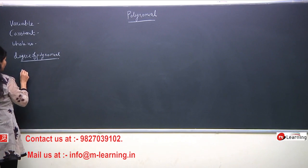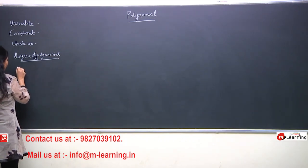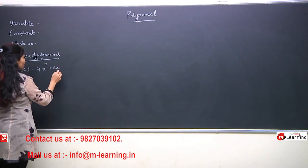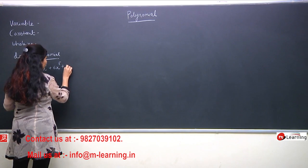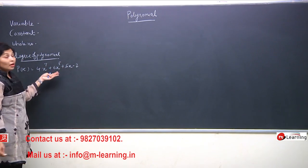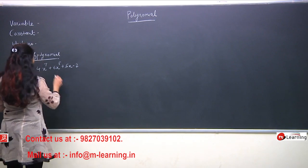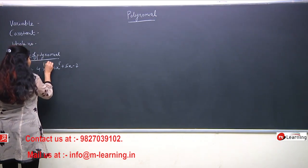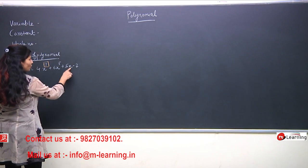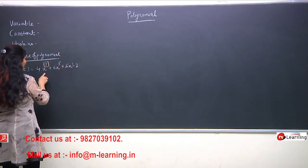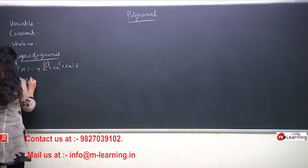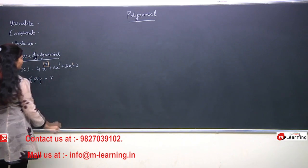I considered some examples previously; today I am considering one more example. I have the polynomial 4x to the power 7, plus 6x to the power 5, plus 5x minus 2. For this expression, I will look at the highest power of the variable. Here the power of x is 1, here it is 5, and here it is 7. The highest power is 7, so the degree of this polynomial is 7.